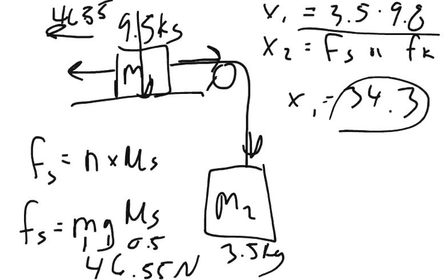Now, if it's set into motion, we know that FK equals N times the coefficient of kinetic friction. So all this is going to be the same, and this is going to be different. So we do 9.5 times 9.8, and then we times that by 0.3.